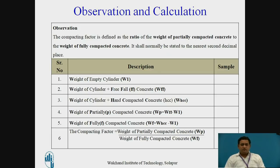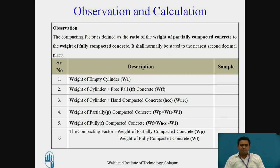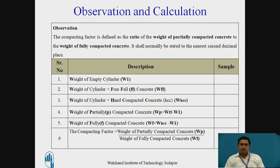The following readings should be noted during the practical performance. First, note the weight of the empty cylinder. Second, weigh the cylinder filled by the concrete freely. Third, record the weight of the cylinder plus the concrete filled by the compacting process by hand. Fourth, the weight of partly compacted concrete WP = WFF minus W1, and the weight of fully compacted concrete WF = WHCC minus W1. The compaction factor is calculated as the ratio of the weight of partly compacted concrete divided by the weight of fully compacted concrete.